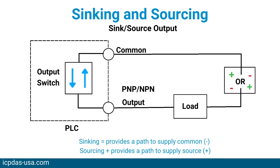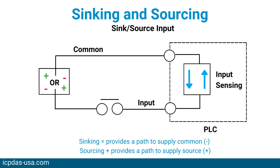Sink-source I/O circuits combine sinking and sourcing capabilities. The I/O circuit in the PLC will allow current to flow in either direction. The common terminal connects one polarity, and the I/O point connects to the other polarity through the field device, providing flexibility in making connections to the field power supply.